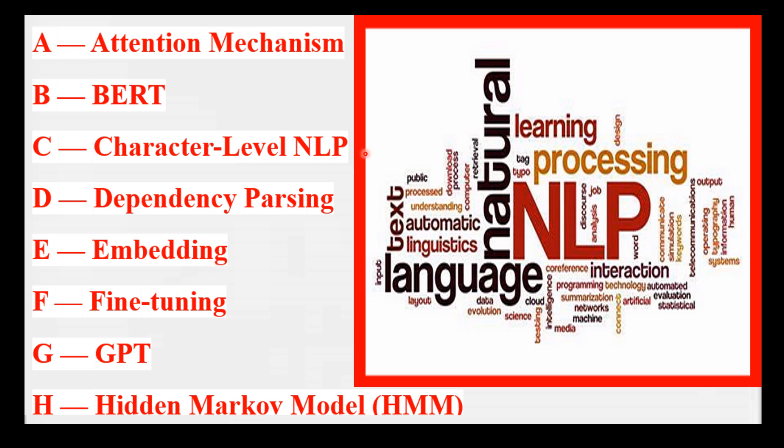E is for Embedding — representing words as vectors in a multi-dimensional space, capturing their semantic meaning. Think of words arranged on a map according to their meanings.